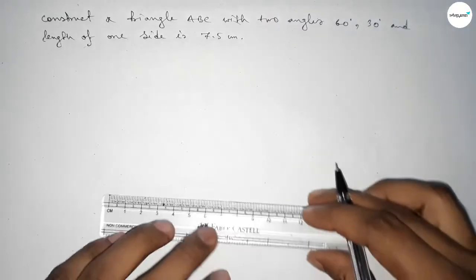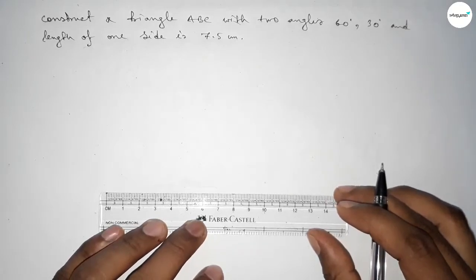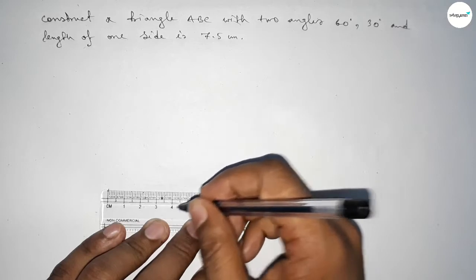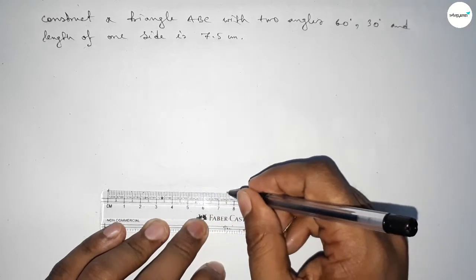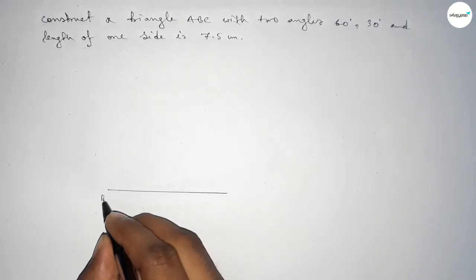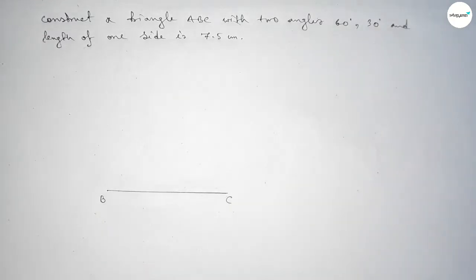Let's start the video. First of all, we have to draw here a line of length 7.5 centimeters. This is a 7.5 centimeter line, taking point B here and C here. Now drawing a 60 degree angle on point B.